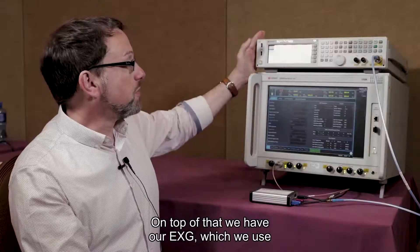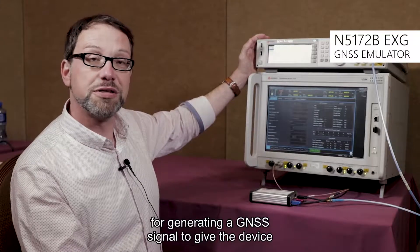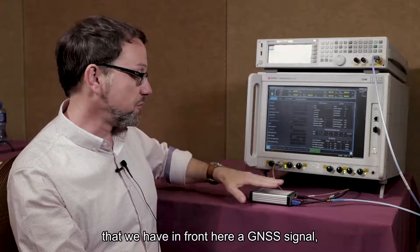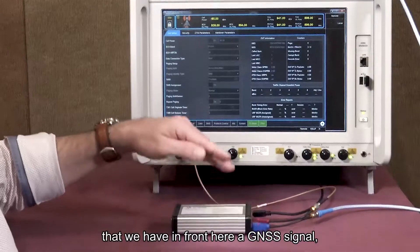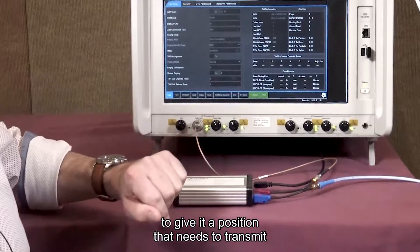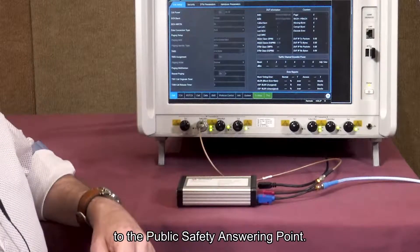On top of that we have our EXG which we use for generating a GNSS signal to give the device that we have in front here a position it needs to transmit over the mobile network back to the public safety answering point.